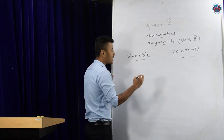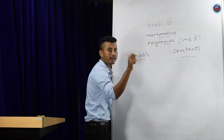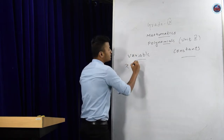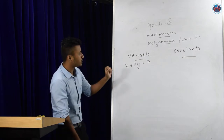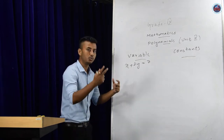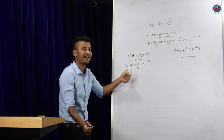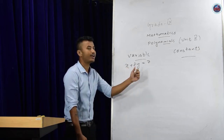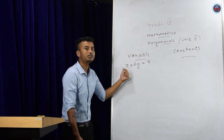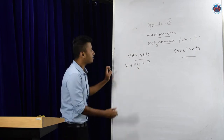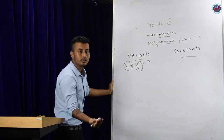For example, in your previous classes you might have solved linear equations in two variables where you drew a graph. Take x plus 2y equals to 7. In this expression, while making the graph, I am going to substitute the value of x or y. That means these two values can be changed — hence x and y are known as variables whose values can be changed.